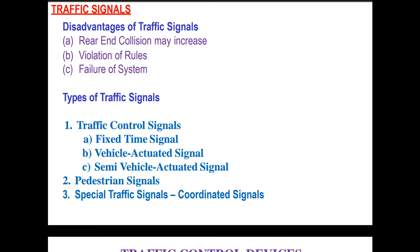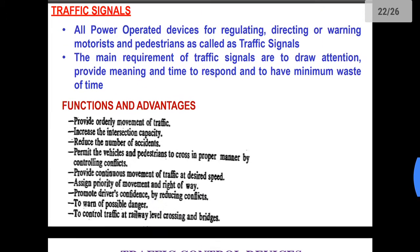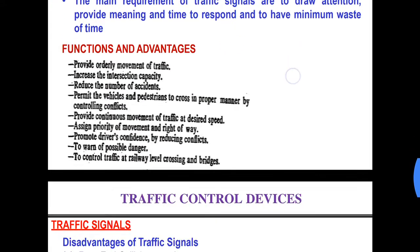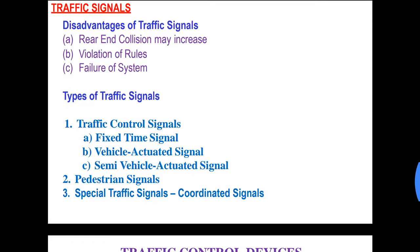There are also chances that violation of rules might happen. And then there is failure of system, since all this might be operated by machinery or might be manual. In the case of machinery-operated signals, there can be chances of failure.